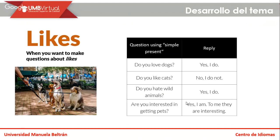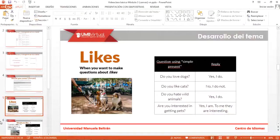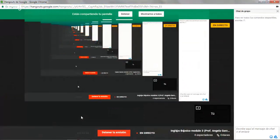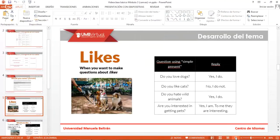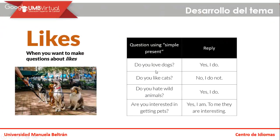Now we're going to work with some expressions according to present simple in regards to likes. When you want to make questions about likes, this is pretty much the focus. You can ask questions like: 'Do you love dogs?' — that would be one of the questions to make an inquiry. 'Do you like cats?' 'Do you hate wild animals?' And 'Are you interested in getting pets?'